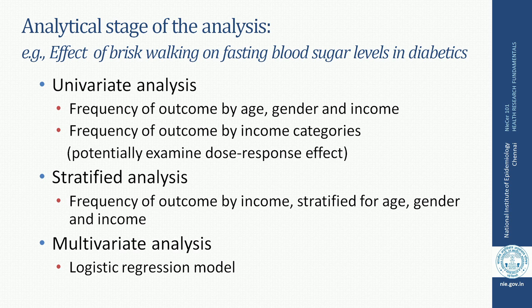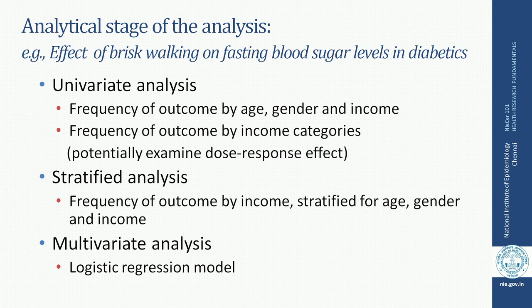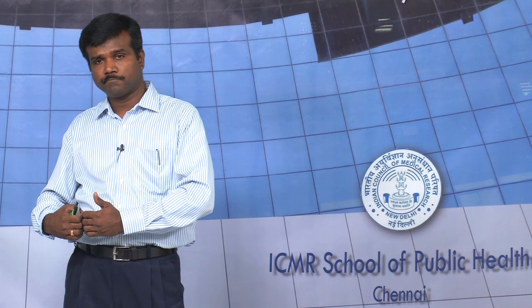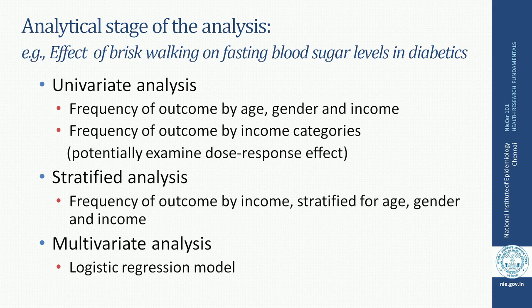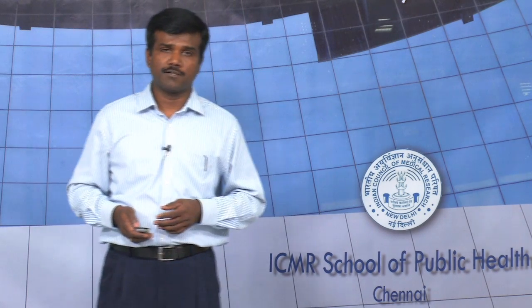In the analytical stage, we work in 3 steps. First, univariate analysis: we look at the outcome — reduction of blood sugar level — by age, gender, income, or similar variables. Then, if you want to do stratified analysis or examine a dose response effect, you examine outcome by categories of a particular variable, such as low, middle, and high income groups. You may then do a stratified analysis examining the relationship between exercise and reduction in blood sugar level, stratified by age, gender, and income. Finally, a logistic regression model would tell us whether exercise can predict reduction in fasting blood sugar level in diabetics.